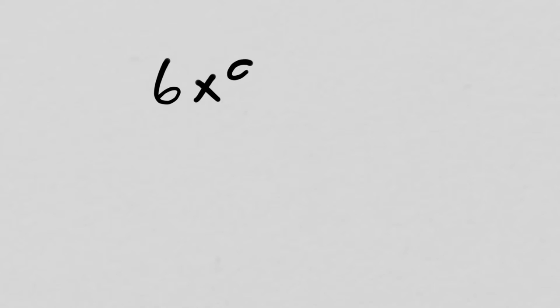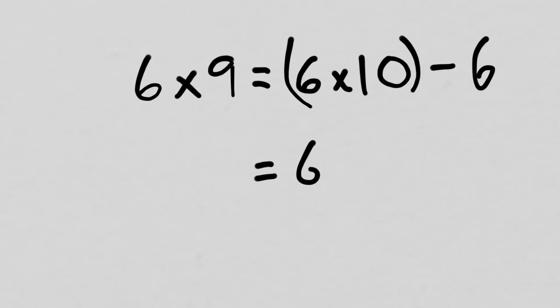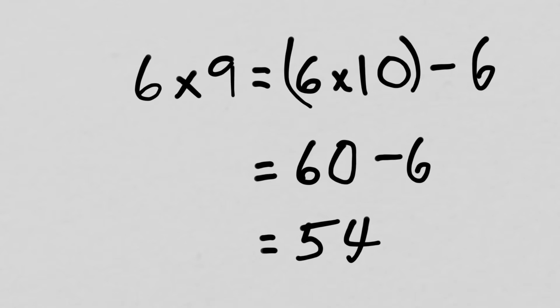Let's do 6 times 9 — we solved this one before, but let's see if you can think through the whole process using this strategy. I want you to pause it, think about what the steps would be, and then come back and check. Okay, hopefully you really did that. 6 times 9 would be the same as 6 times 10 minus 6. 6 times 10 is 60, so it's 60 minus 6. 60 minus 6 is 54. This is a really strong strategy — I really like it. You could go and try it on some other ones on your own.